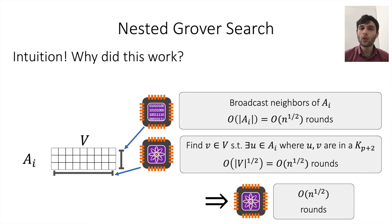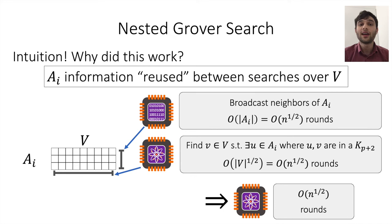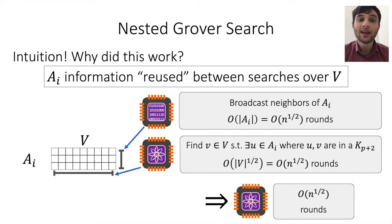Why did this work? The key was that we reused information between searches over V. When we search over nodes in V, we don't have to pay an additional setup cost for learning information from A_i. The reason is that in the distributed setting, we only care about communication complexity. If we perform some communication before the Grover search itself, the information learned in that classical communication can be reused for free throughout the Grover search.